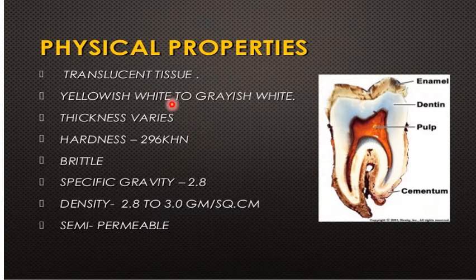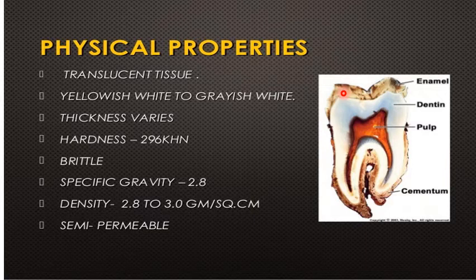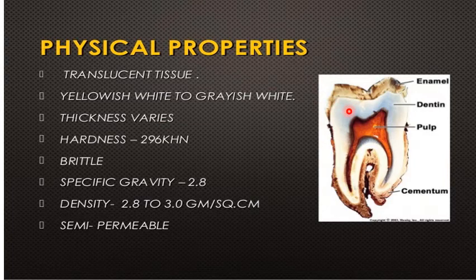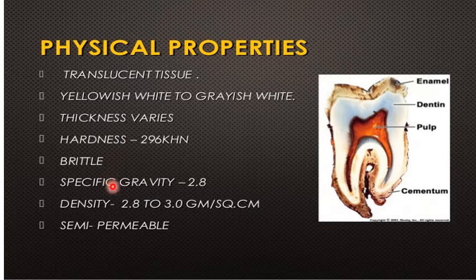The physical properties of enamel: it is a translucent tissue — this is the mature enamel and this is the dentine — it takes the color of the dentine below it, ranging from yellowish to whitish to gray-white in color. Thickness varies; the highest thickness is at the cusp. It also varies in hardness, specific gravity, and density, and it is a semi-permeable structure.